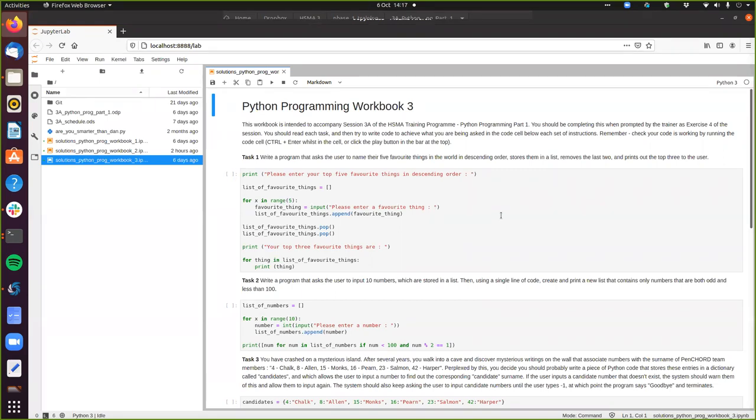So the first task was to write a program that asked the user to name their five favorite things in the world in descending order and stores them in the list, removes the last two, and prints out the top three to user. Now there's different ways you could do this. The way I've done it here is I've got a message that I print out first saying please enter your top five favorite things in descending order. And then I've got a list that I've called list of favorite things, which I've just created it as an empty list to start with. And then in my version, I go through a for loop five times, and I get the user to, on each iteration of that for loop, I get them to input a favorite thing, which is stored as a favorite thing as a string, and it then appends that favorite thing that's been input to the list of favorite things. So by the end of this, we've got a list of length five of their favorite things.